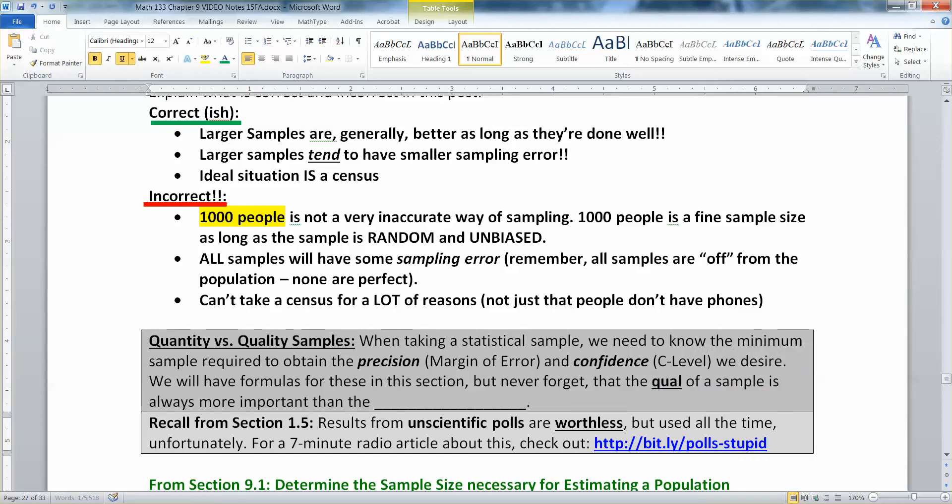Never forget, because you're going to always have a little bit of error, that what matters most is quality. The quality of a sample is more important than the quantity. How well was it taken, random and unbiased, that always matters more to us than the quantity. How they took the sample is way more important to us than how many people are in it. A thousand people is fine.